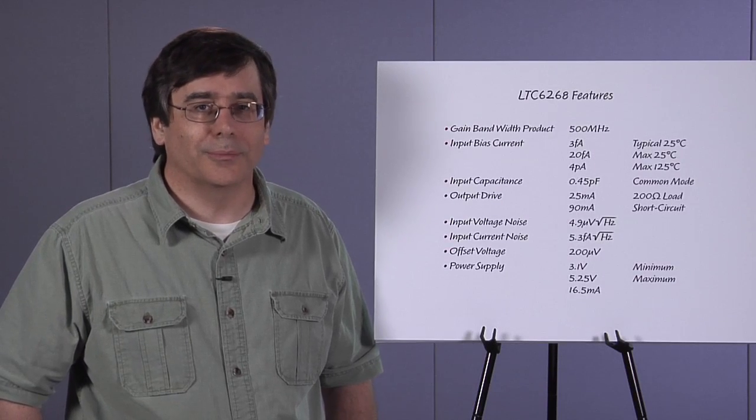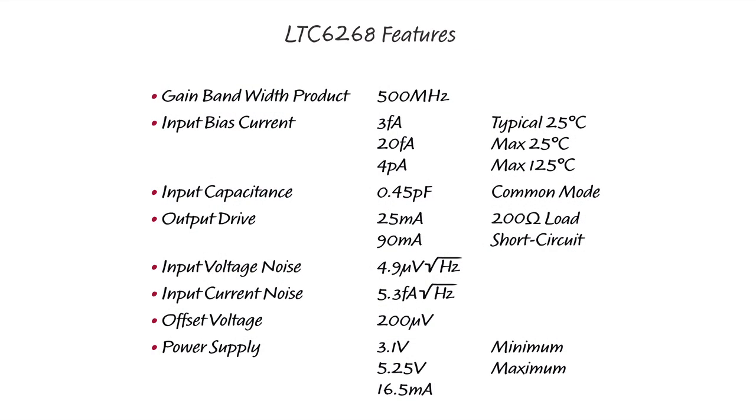Let's look at some of the key features of this part. The gain bandwidth product is 500 MHz. The input bias current is extremely low, typically less than 3 femtoamps at room temperature, increasing to a maximum of only 4 picoamps at 125°C. Equally striking is the common mode input capacitance of 0.45 pF.